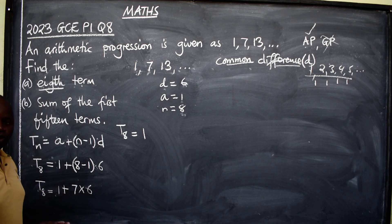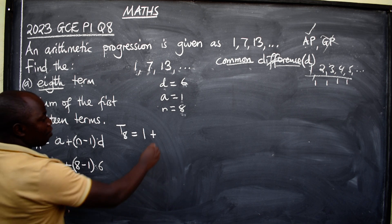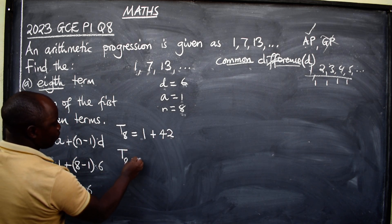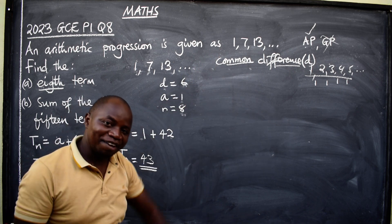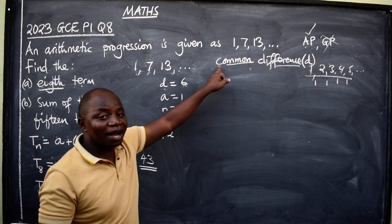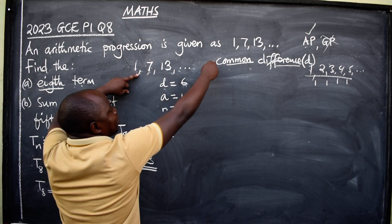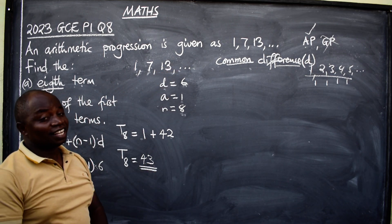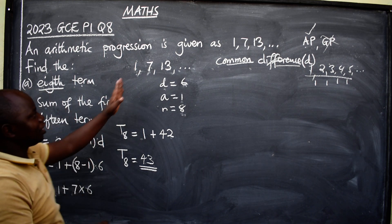Be careful — use BODMAS. Don't say 1 plus 7 straight away; multiply before you add. So it becomes 1 plus 7 times 6, which is 1 plus 42, giving us 43. The eighth term is 43. You can confirm by counting up adding 6 each time — you'll still get 43.